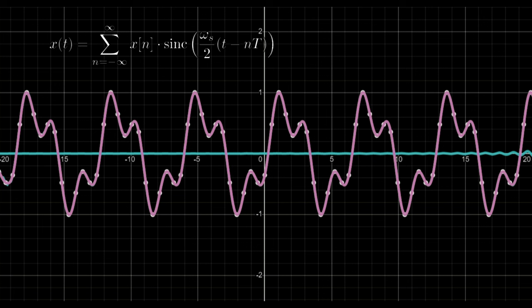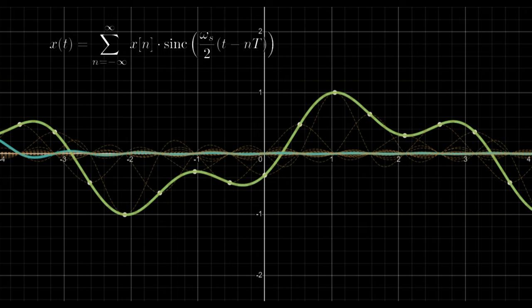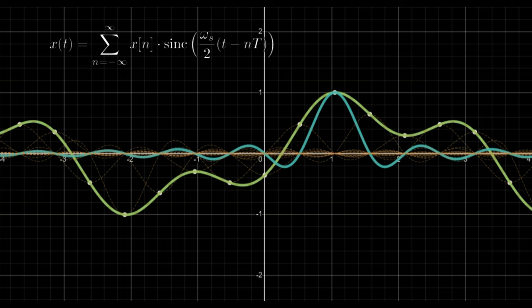We add up infinitely many sinc functions, whose height depends on the sample they correspond with. So at time t equals zero, we need to add all the sinc functions that depend on the past values of the signal, but also on the future values of it. We can't predict the future yet, so for now it will remain only in theory.